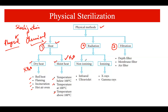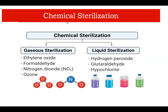Radiations are of two types: non-ionizing and ionizing. The choice between radiation and heat depends on the kind of object we are trying to sterilize. The third physical method is filtration, with different filtration techniques available. The second major category is chemical sterilization, which is further of two types: gaseous sterilization and liquid sterilization.